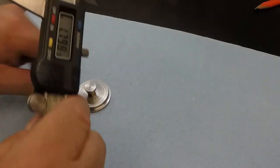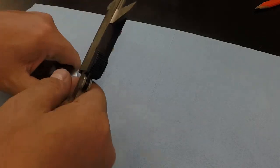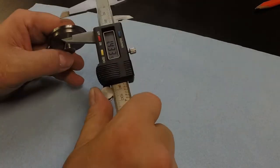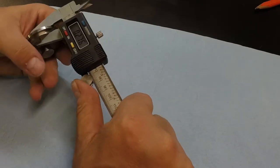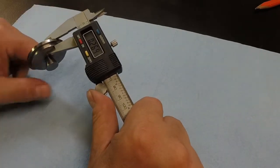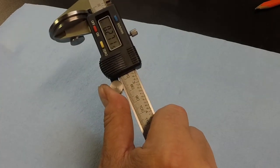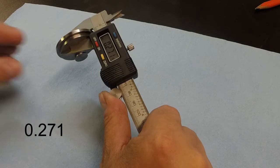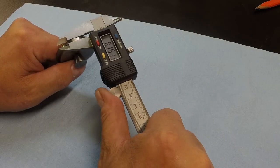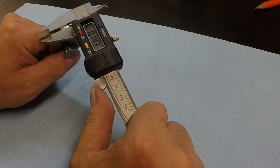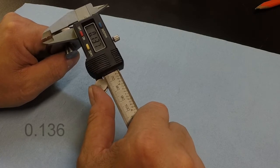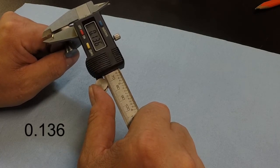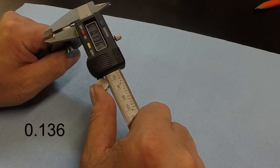So, that's all your dimensions. The total height of everything, let's see if I can get it here. Well, here, I'll do these measurements and you can add them up. So, the total thickness of both steps here, 271 thousandths, and the biggest one is 136 thousandths.